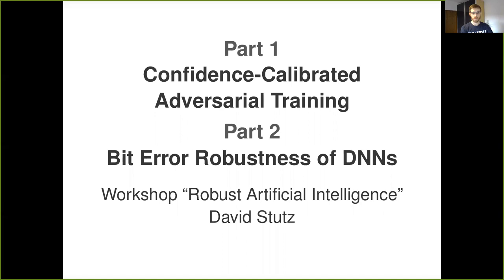Hi, I'm David, and for this workshop I want to talk about two recent projects on robustness. First, I want to talk about robustness against adversarial examples — specifically, confidence calibrated adversarial training, which allows to obtain robustness against various types of adversarial examples, even if unseen during training. And secondly, I want to talk about robustness against bit errors in quantized DNN weights, which in the context of DNN accelerators can improve energy efficiency significantly.